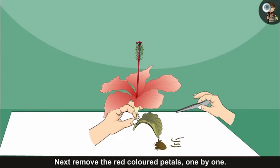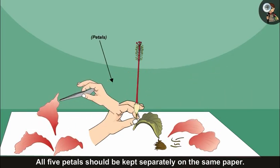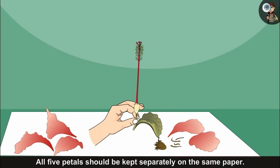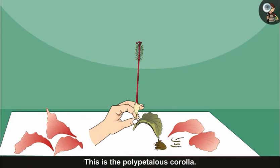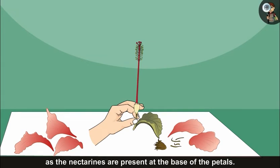Next, remove the red-colored petals one by one. All five petals should be kept separately on the same paper. This is the polypetalous corolla. Your hand may become sticky while doing this as the nectaries are present at the base of the petals.